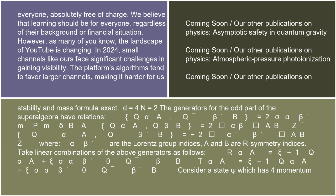For d=4, n=2, the generators for the odd part of the superalgebra have the relations: {Q_alpha a, Q_beta b} = 2 sigma_alpha_beta^m P_m delta_b; {Q_alpha a, Q_beta b} = 2 epsilon_alpha_beta epsilon_a; {Q_alpha a, Q_beta b} = -2 epsilon_alpha_beta epsilon_a,b Z.